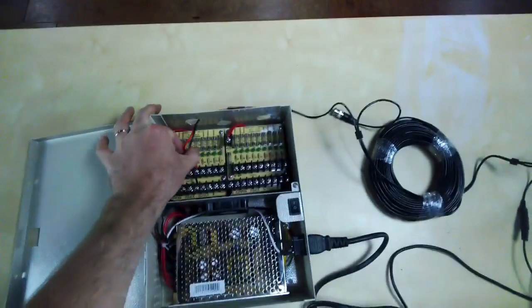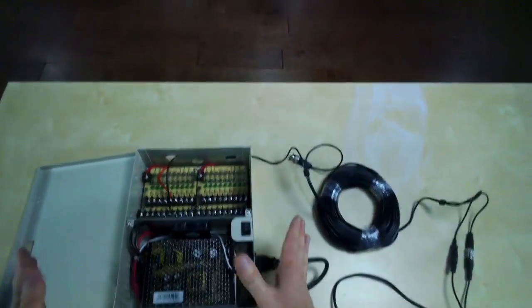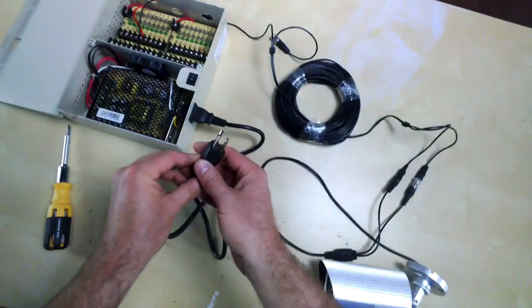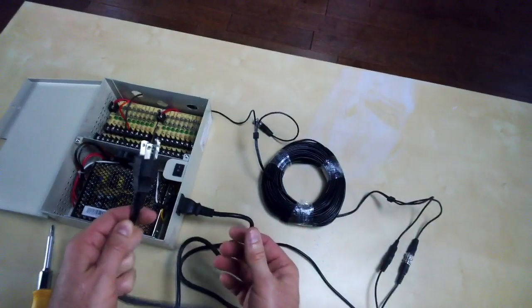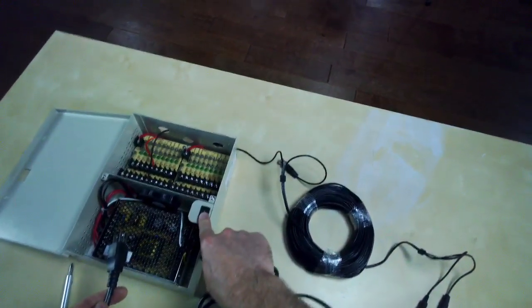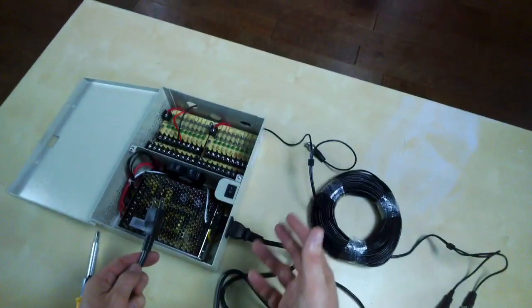And now those are secure there. And typically, this power supply box, we mount it on the wall right near your DVR, and it just gets powered by a standard 120-volt outlet. So this just plugs into a standard wall outlet. And then there's a power switch for the whole power supply box. That fires up all the ports, and this can power up to 18 cameras.